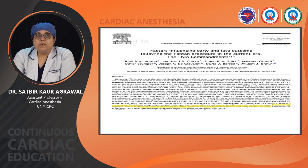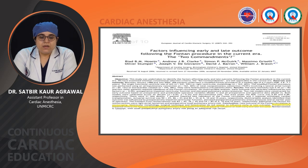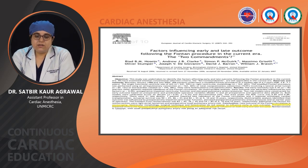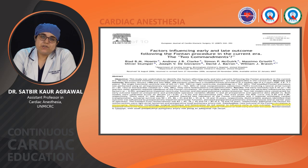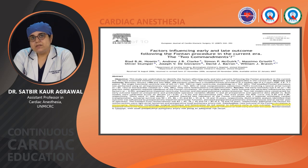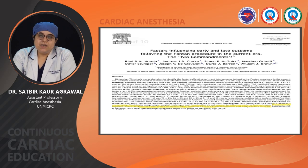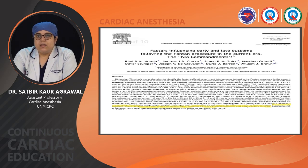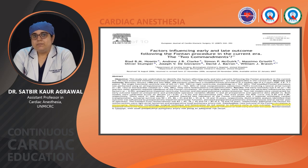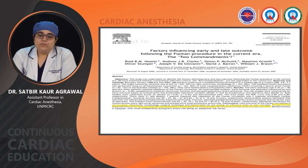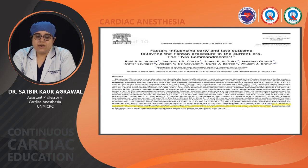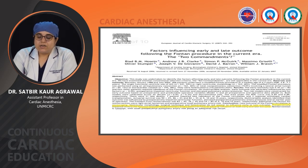A study done in 2007 by Rayed Hossein et al in around 405 Fontan patients compared their pre-op hemodynamic parameters to their post-op morbidity — early and late. They found that elevated pulmonary artery pressure more than 15 pre-op and LV dysfunction were the two major commandments that must be followed. If these two criteria are not met, the patient is not an ideal Fontan candidate.